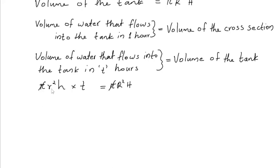Now, radius of the cross section is 0.1, so 0.1 squared. And the length of the cross section is 3000 m, so h is 3000 m × t is equal to...